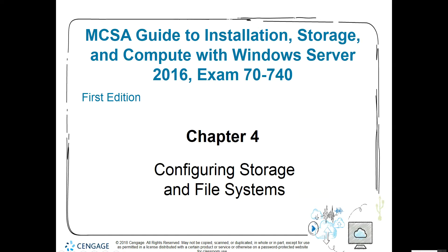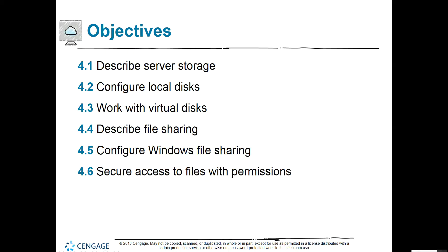All right, let's start into chapter four. We're going to configure storage and file systems in this chapter. Our objectives: we're going to describe server storage, be able to configure local disks, work with virtual disks, describe file sharing, configure Windows file sharing, and secure access to files with permissions.